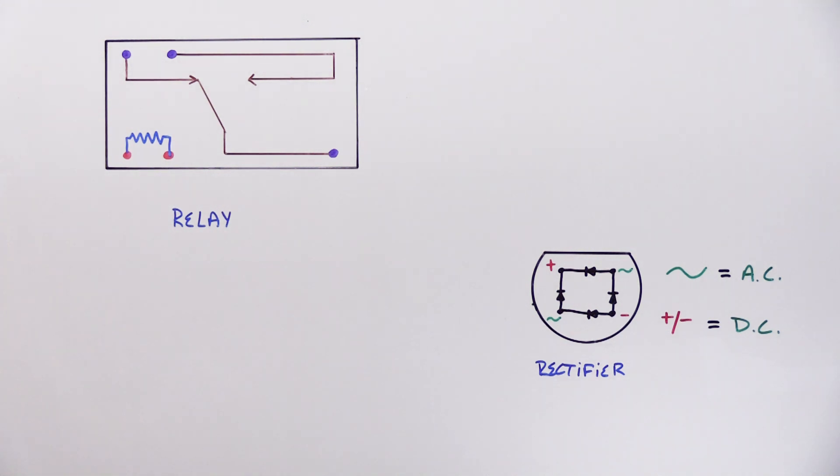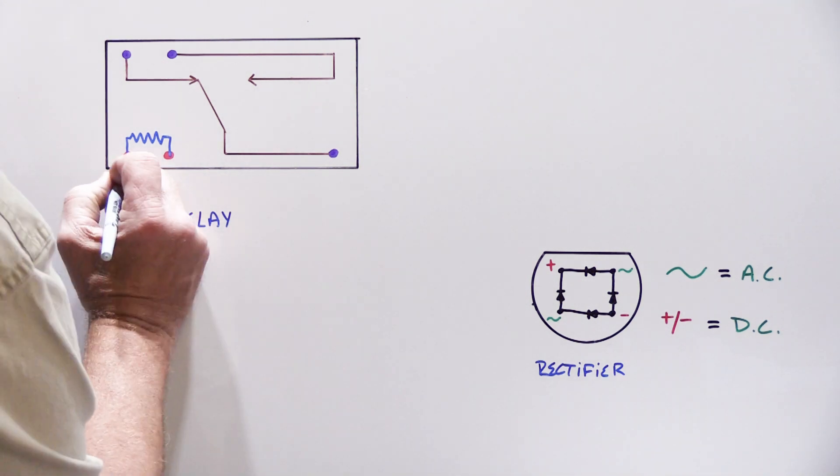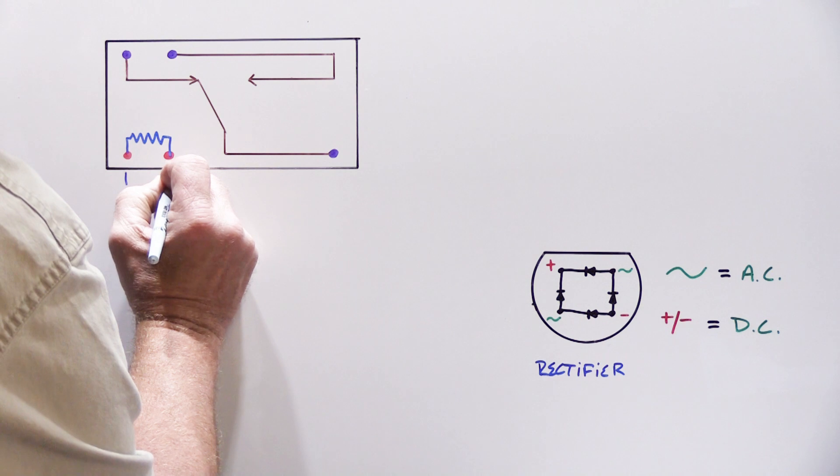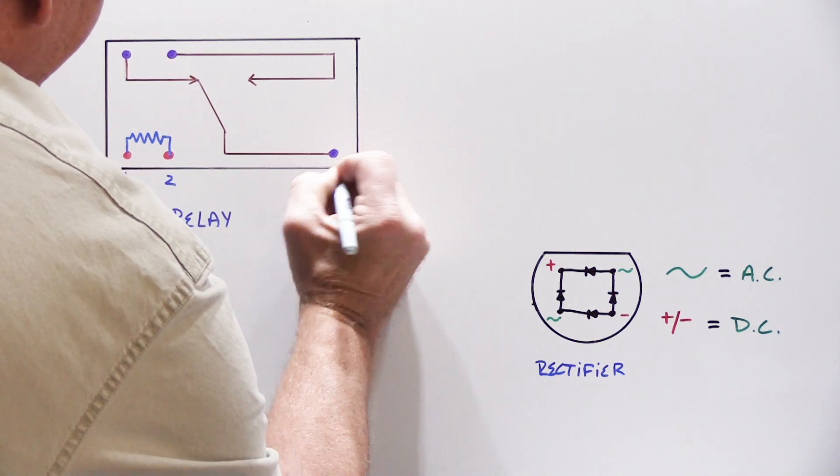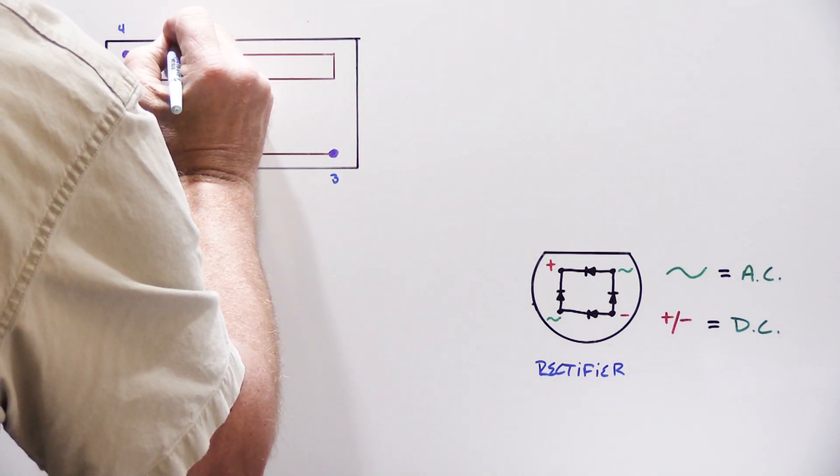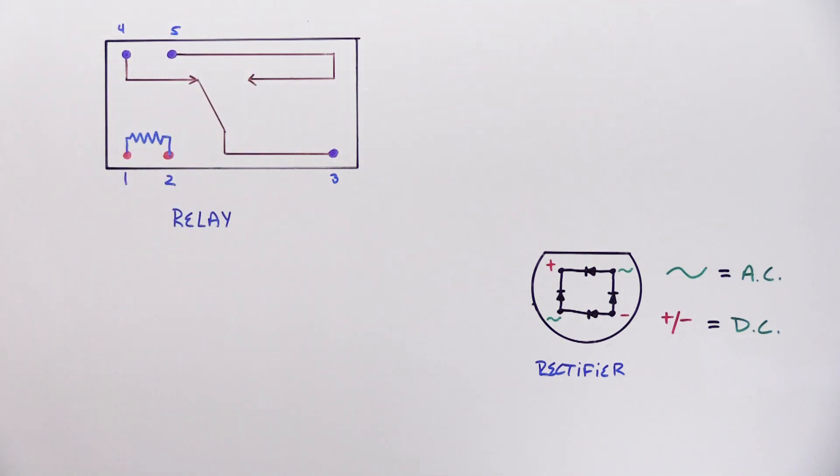So let's write this out so you'll understand how to do this. First thing we're going to do is we're going to give each terminal a number because that will make it easier. So we're going to do one, two, three, four, and five, because that seems like the most logical reasonable way to do it. Left to right, bottom to top works really well for me.